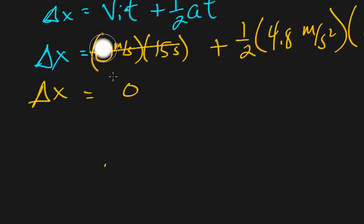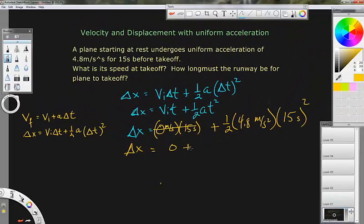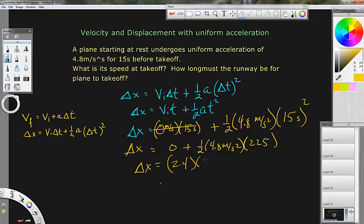But it's going to be plus all of this. When I do this, I need to take 15 times itself first. So this is 1 half 4.8 meters per second squared, times 15 times 15, which is 225. Half of 4.8 is 2.4 times 225 gives us a total displacement of about 540 meters.